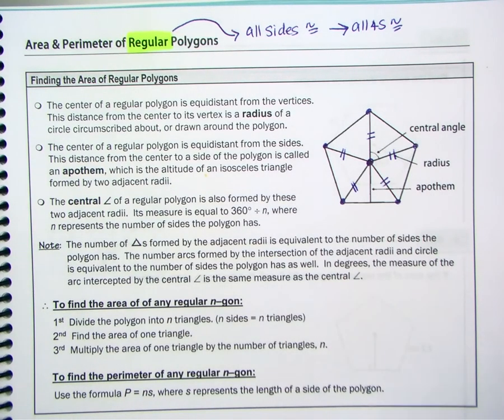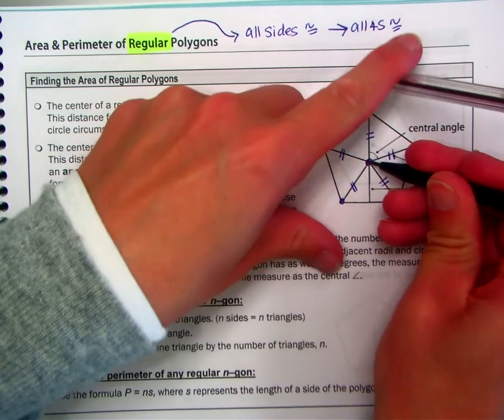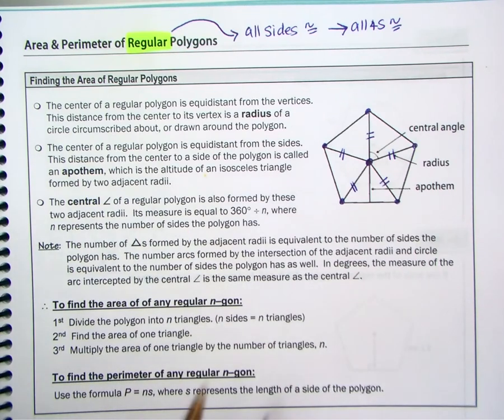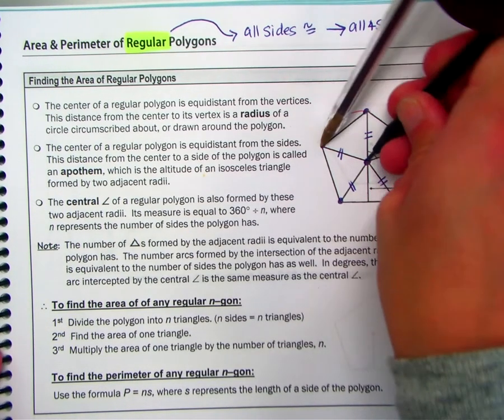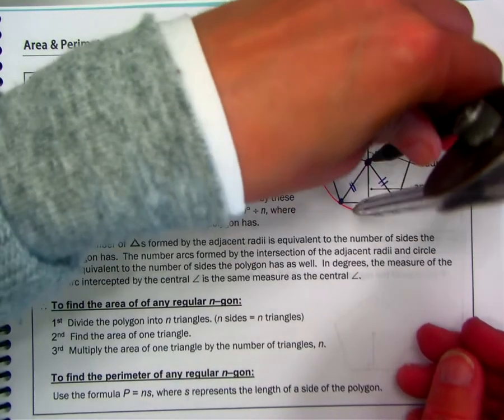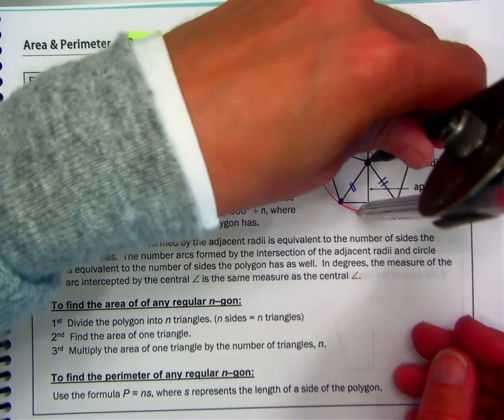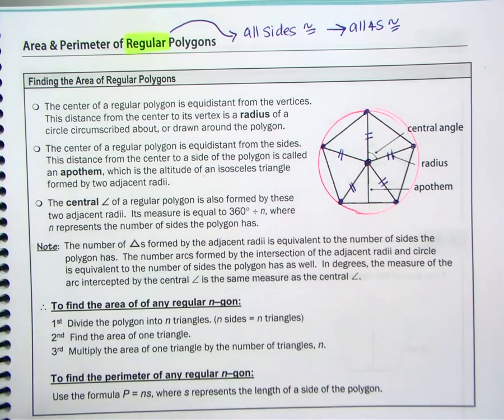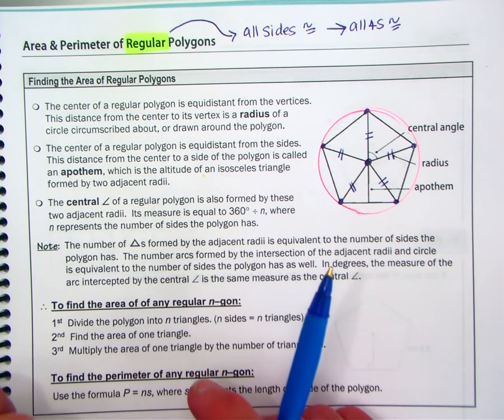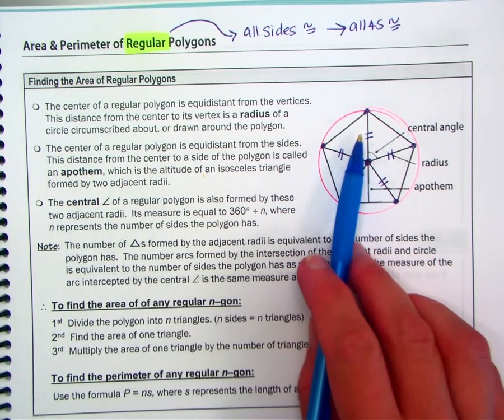And it's a radius of a circle. So if you line up your compass and put the compass point at the center of the polygon and your pen at a vertex, you should be able to draw a circle around the polygon. And that circle is drawn around or circumscribed about our pentagon. So all of these distances are the same.